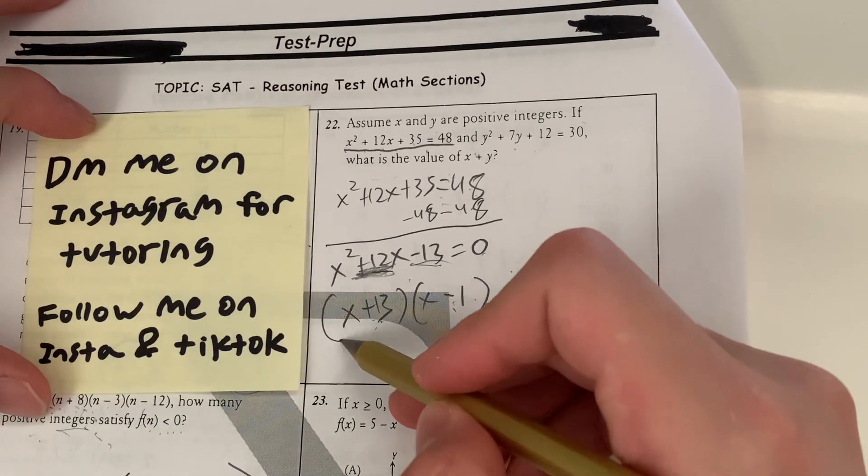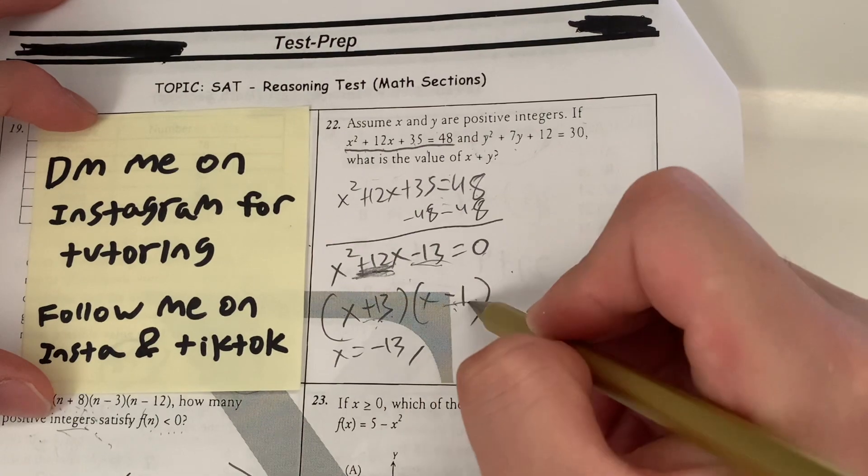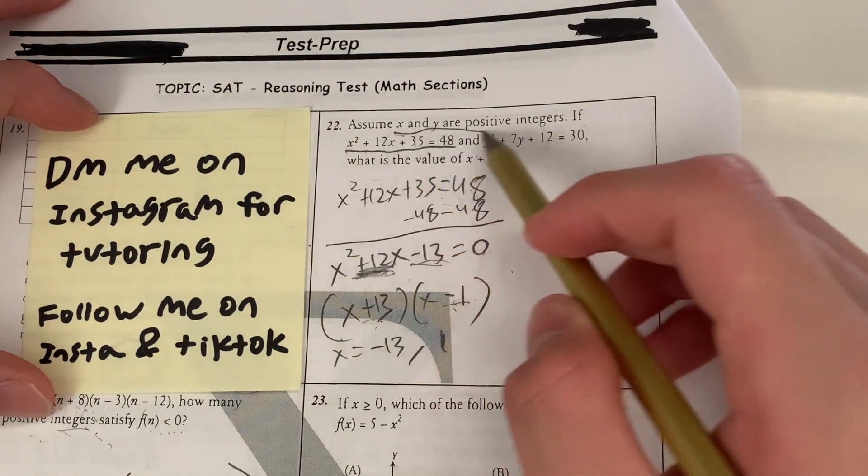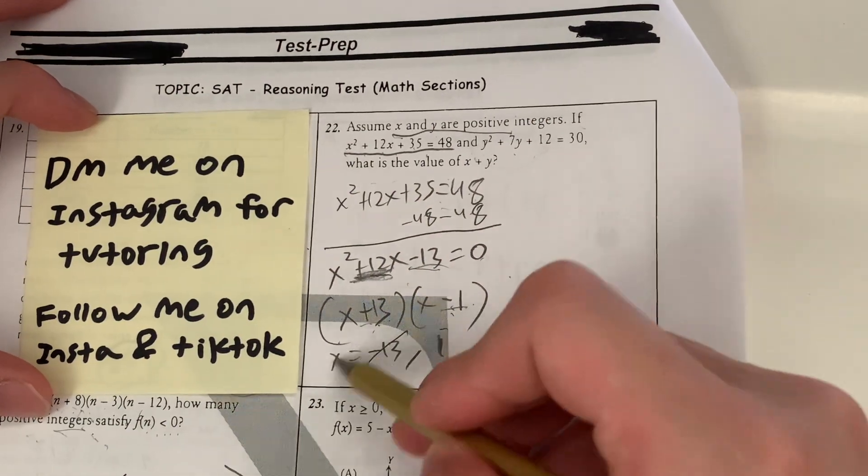And now I get x is equal to opposite of positive 13, which is negative 13, as well as the opposite of negative 1, which is 1. Now the question is saying that they're all positive. x and y are positive integers. So it means that rules out negative 13. So x equals 1.